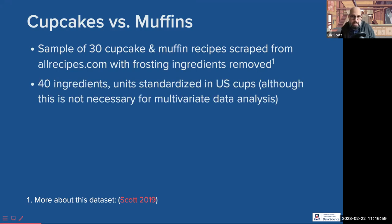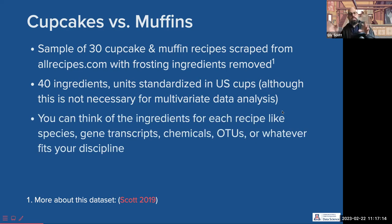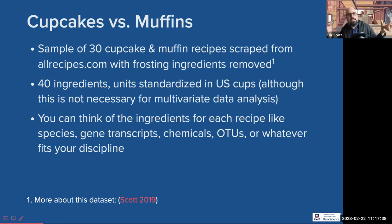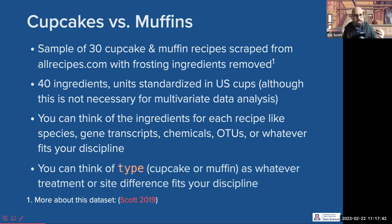This data set has 40 ingredients standardized in units of U.S. cups, although that's not necessary for multivariate data analysis — we can have variables in different units. You can think of the ingredients for each recipe like species in an ecosystem, or gene transcripts in a yeast cell, or chemicals found in a plant, or OTUs — microbial species in a petri dish. Think about that analogy and cement it in your mind.